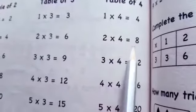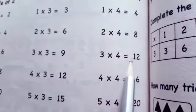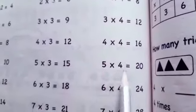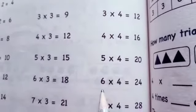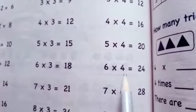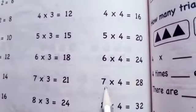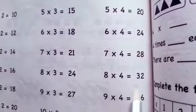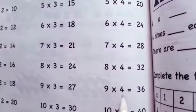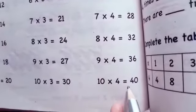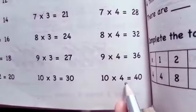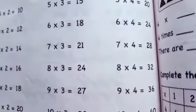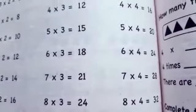Now we are going to revise the table of four. One time four is four, two times four is eight, three times four is twelve, four times four is sixteen, five times four is twenty, six times four is twenty four, seven times four is twenty eight, eight times four is thirty two, nine times four is thirty six, ten times four is forty.